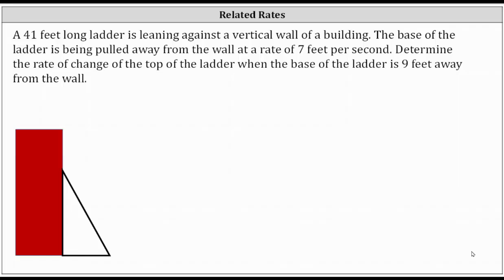A 41 foot long ladder is leaning against a vertical wall of a building. The base of the ladder is being pulled away from the wall at a rate of seven feet per second. Determine the rate of change of the top of the ladder when the base of the ladder is nine feet away from the wall.